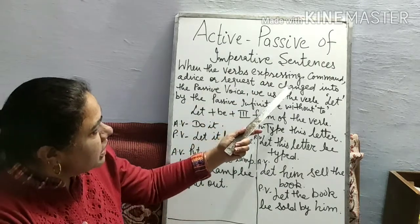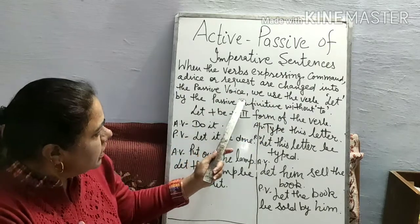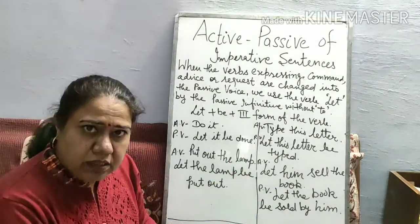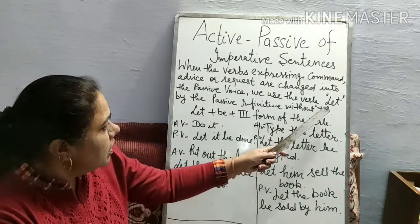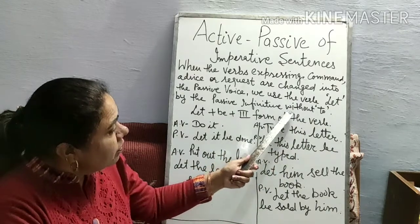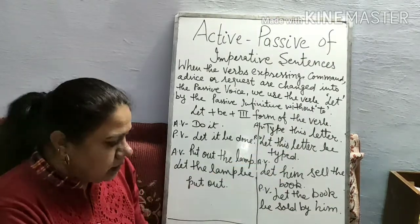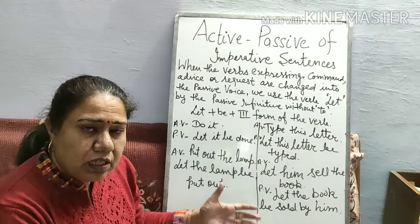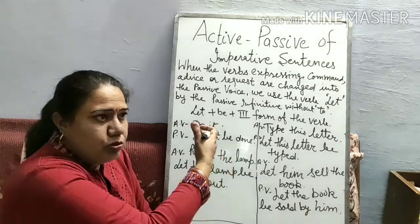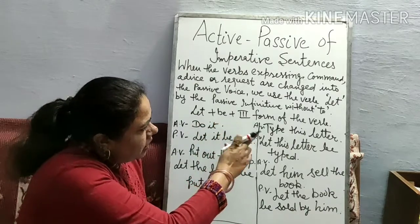When verbs expressing command, advice, or request are changed into passive voice, we use the verb 'let.' The rule will be: let + object + be + third form of the verb. This gives us the correct passive voice answer.